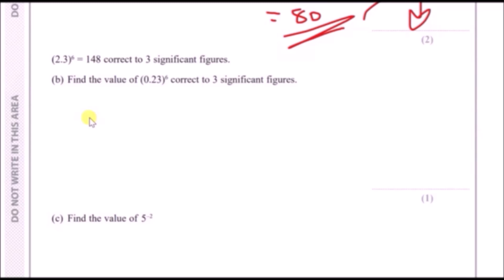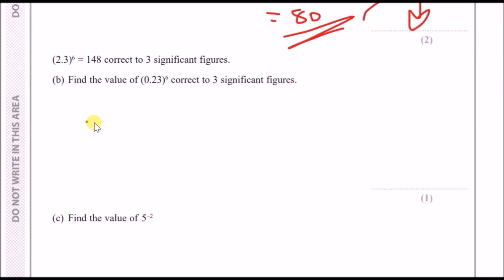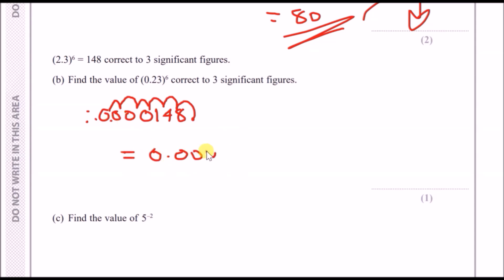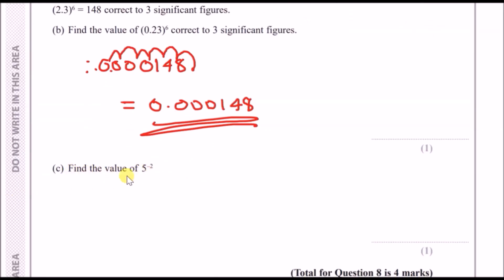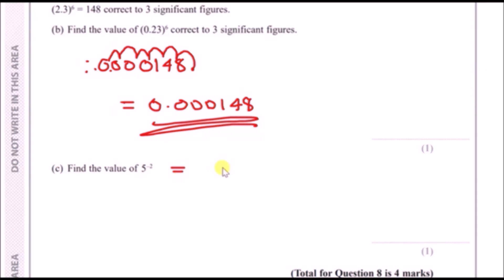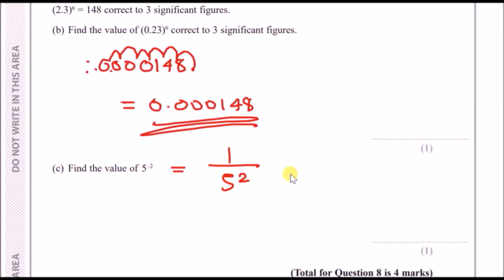Part b: given that 2.3⁶ = 148, find the value of 0.23⁶. The numbers are 10 times apart, so raising to the power of 6 moves the decimal 6 places back — giving 0.000148. For part c: 5 to the power of −2 is a reciprocal, so it equals 1/5² = 1/25.